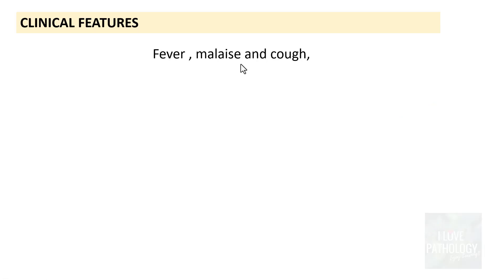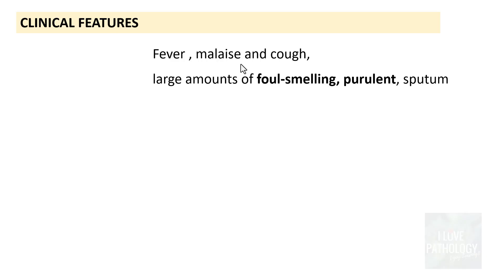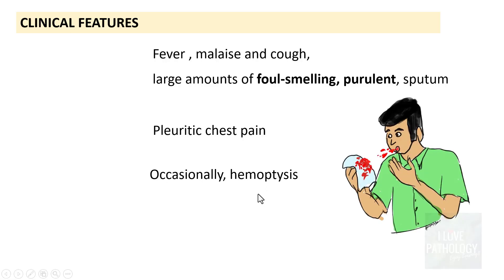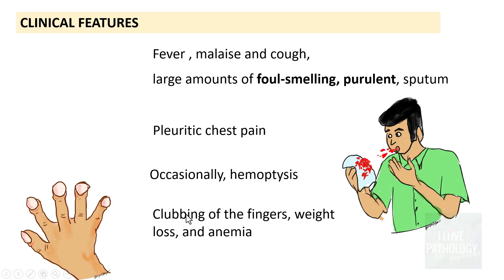What are the clinical features of patients with lung abscess? Patients usually present with fever, malaise, and cough — often producing large amounts of foul-smelling purulent sputum. If infection extends into the pleura, patients manifest pleuritic chest pain. Occasionally, if there is erosion of blood vessels, patients manifest hemoptysis. There can also be clubbing of fingers, weight loss, and anemia in long-standing cases.